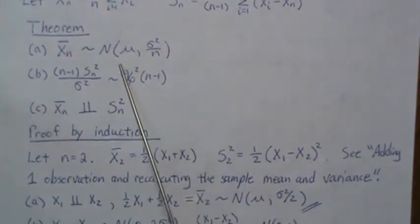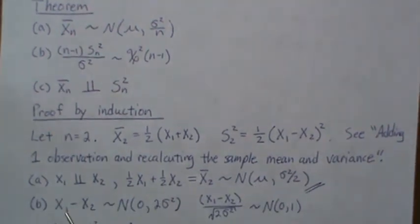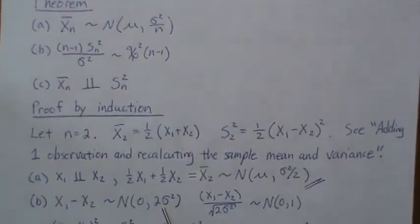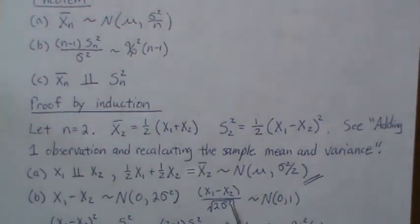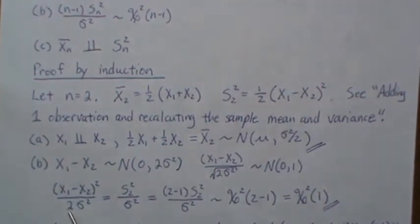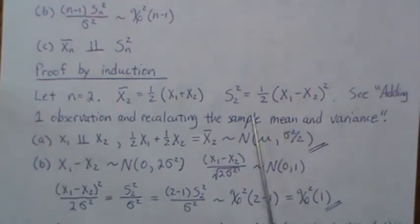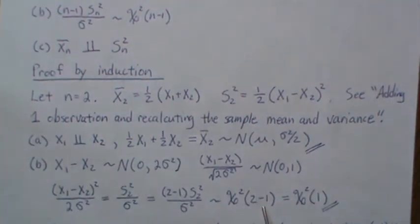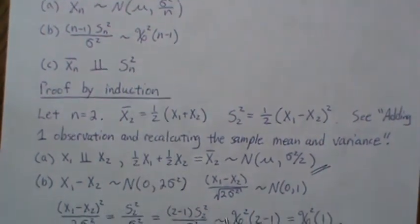For part (b), X_1 minus X_2 is a linear combination of independent normal random variables, so it itself is a normal random variable, and you can show it is Normal(0, 2*sigma²). If we divide by the standard deviation — the square root of 2*sigma² — then this is a Normal(0,1) random variable. Squaring a Normal(0,1) gives a chi-squared with 1 degree of freedom. This piece with the two is the sample variance, so it's (n-1)*S² / sigma² and is chi-squared with 2 minus 1 equals 1 degree of freedom, satisfying part (b).